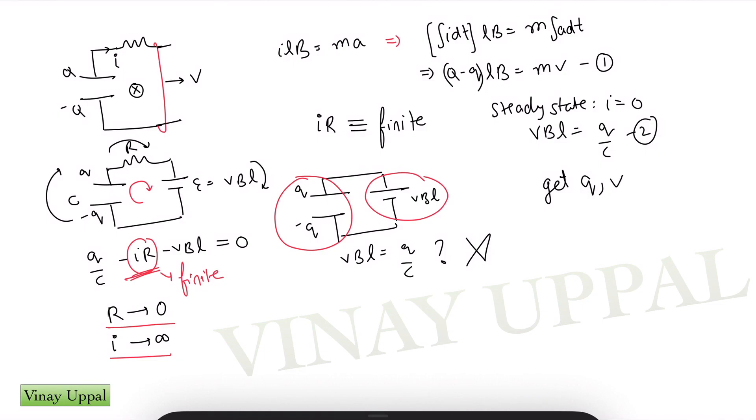So basically, because the current is tending to infinity, I L cross B will tend to infinity. But all of this is occurring for a very short interval of time. So basically, it's as if the force, the magnetic force on the rod is going to be an impulsive force. And what we've written here is the impulse of the force is equal to change in momentum. Basically, we've written impulse momentum theorem for the magnetic force on the rod.